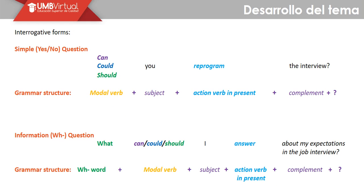For interrogative forms, we can use yes-no questions. Esas preguntas de yes-no questions — vamos a mirar los verbos modales: can, could, should en primer lugar, luego el sujeto, después el verbo en presente y el complemento. Example: 'Could you reschedule the interview?' Recordemos que el 'could' es un poco más formal que el 'can', dependiendo del contexto y la intención del hablante. For WH information questions: 'What can I answer about my expectations in the job interview?' The structure is: WH word plus modal verb plus subject plus base verb plus complement, and the question mark at the end.